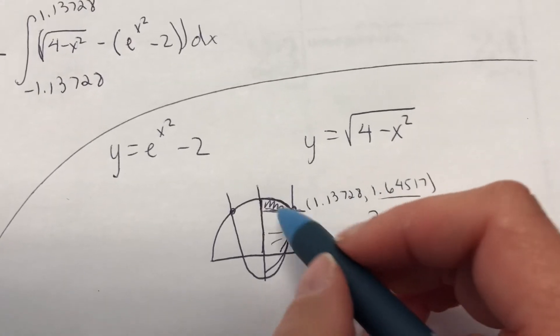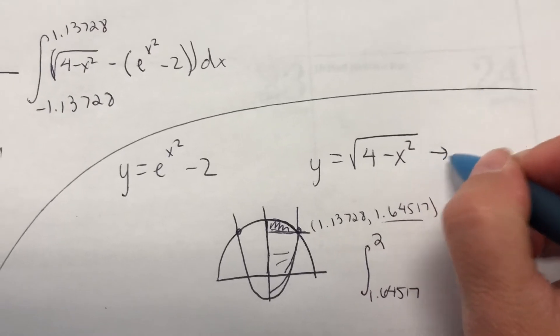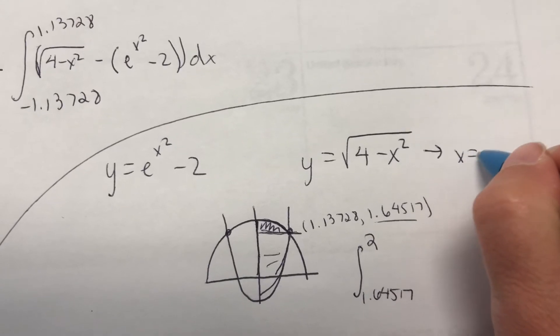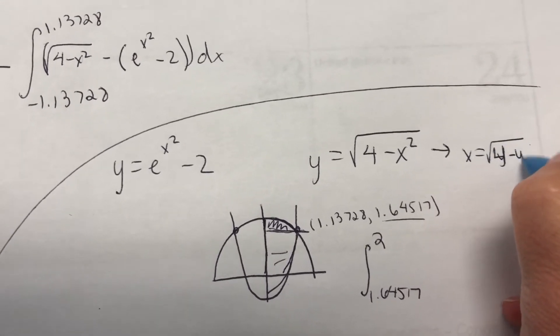And now it's just like the circle part of it. So you have to change this circle, solving it for y. So that, or solving it for x, so it ends up being 4 minus y squared.